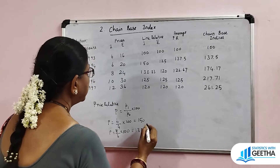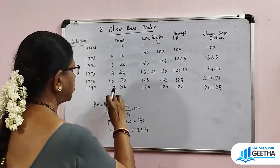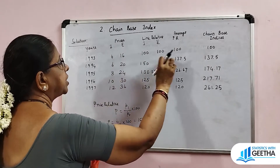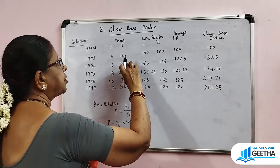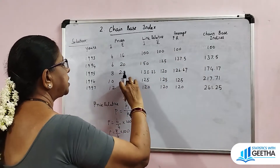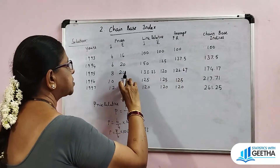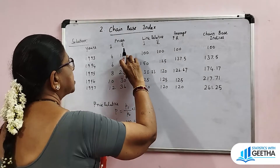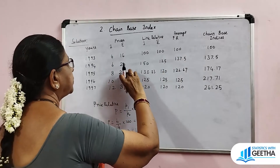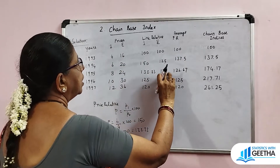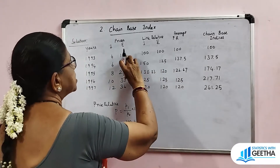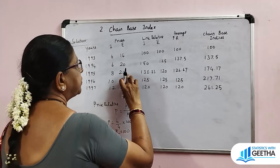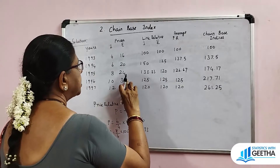Continuing the calculations: 10 by 8 into 100 gives 125; 12 by 10 into 100 gives 125. For commodity two: 20 by 16 into 100 gives 137.5; 24 by 20 into 100 gives 120; 20 by 20 into 100 is 100, corrected to 30 by 24 into 100 which is 125; 30 by 24 into 100 gives 125; 36 by 30 into 100 gives 120. So the link relatives for the second commodity are complete.